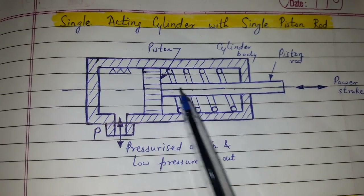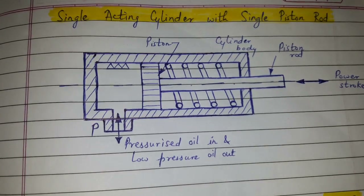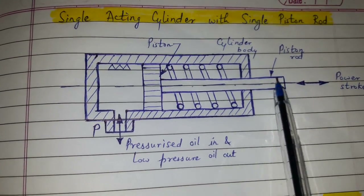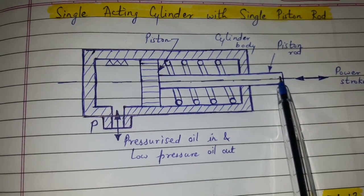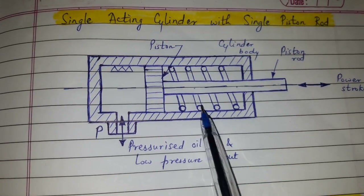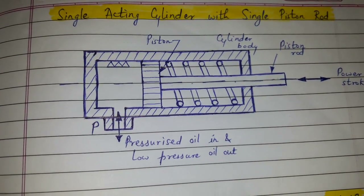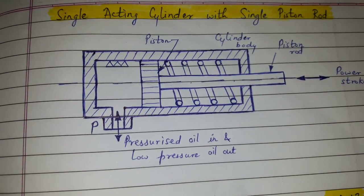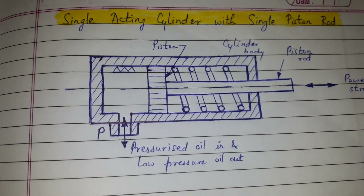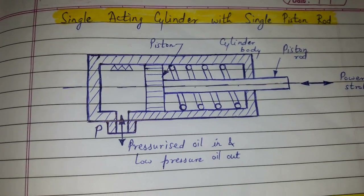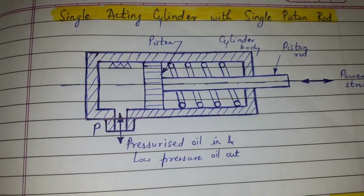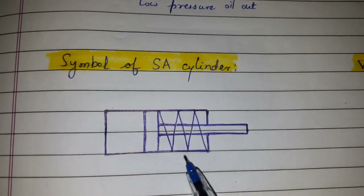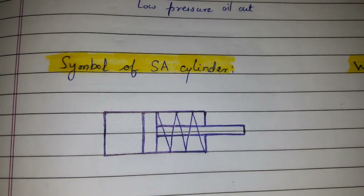During the power stroke, useful work is done at the end of the piston rod, like pushing the load. This cylinder has applications in sequencing circuits or clamping the workpiece. The symbol of single acting cylinder with single piston rod looks like this — it is similar to its construction.